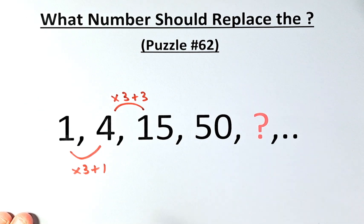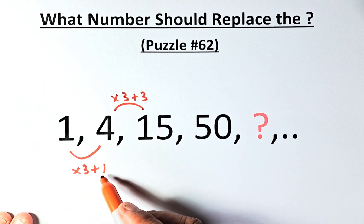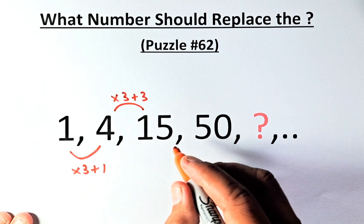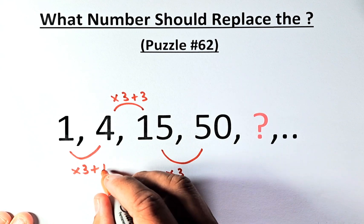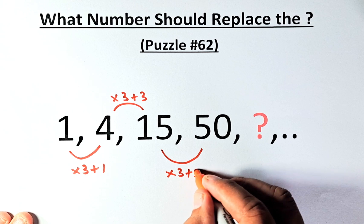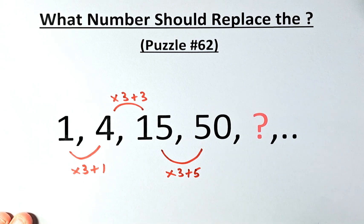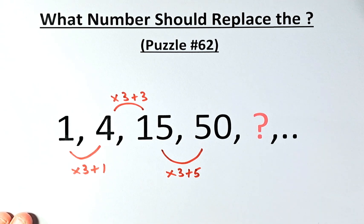So you know the drill now. Times 3 all the time and we're going to add an odd number: plus 1, plus 3. So the next number should be multiplied by 3. And because it's 1, 3, the next number should be 5. So 15 times 3 is 45, 45 plus 5 is 50.